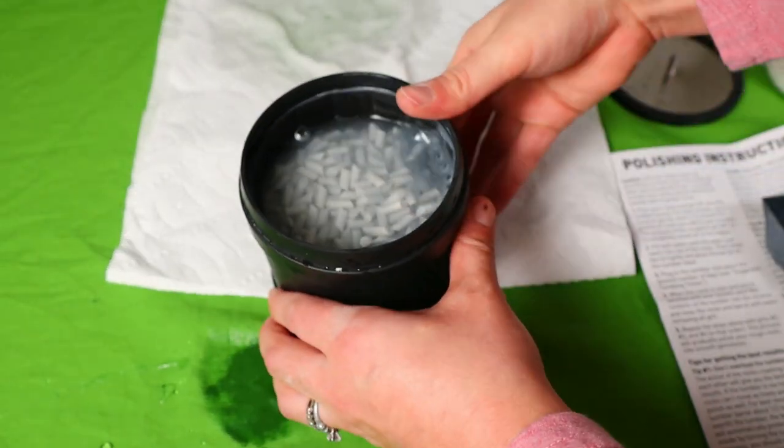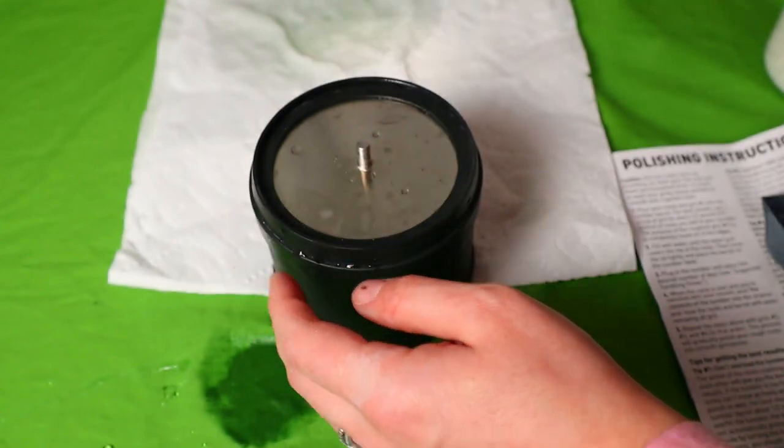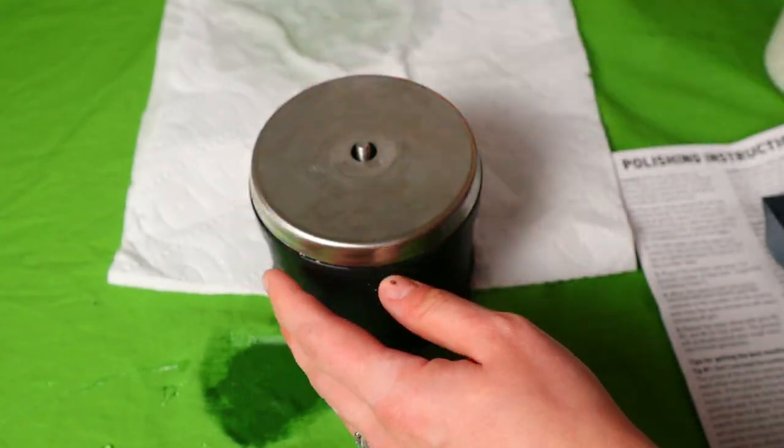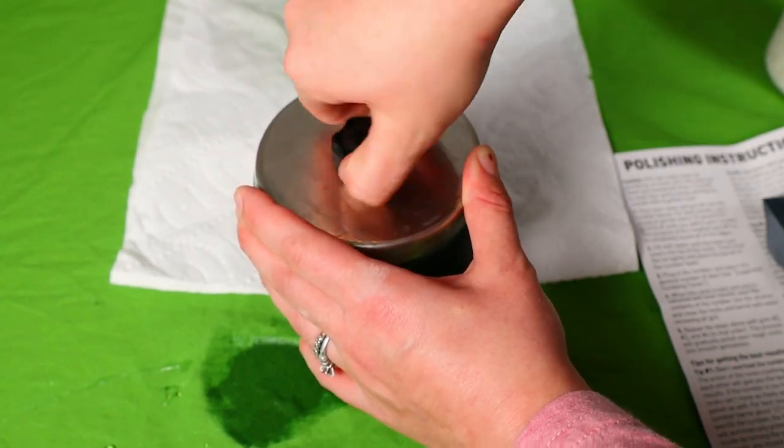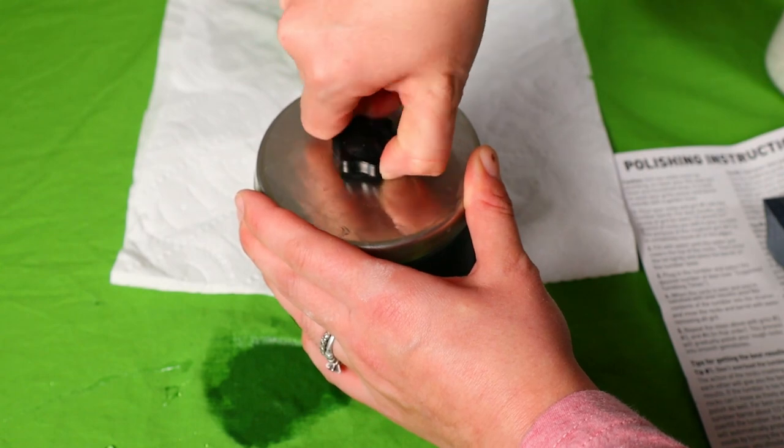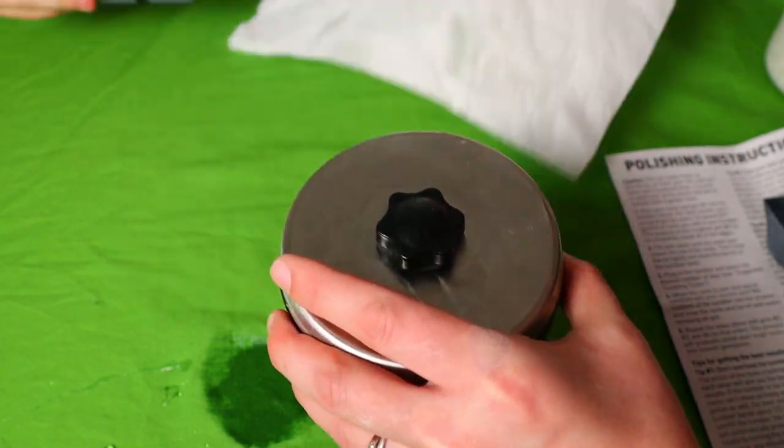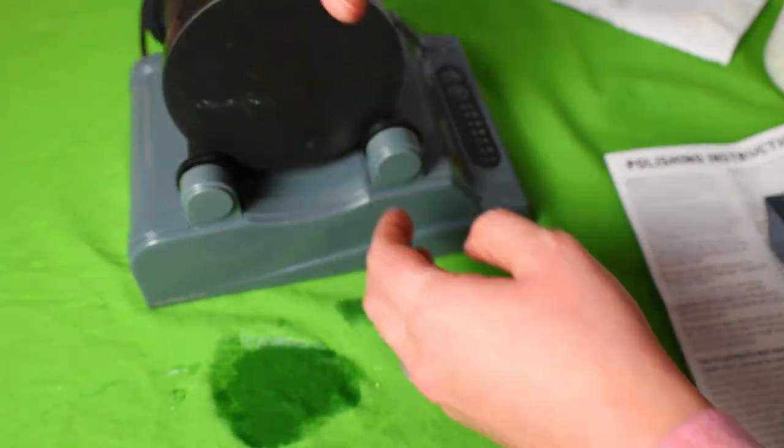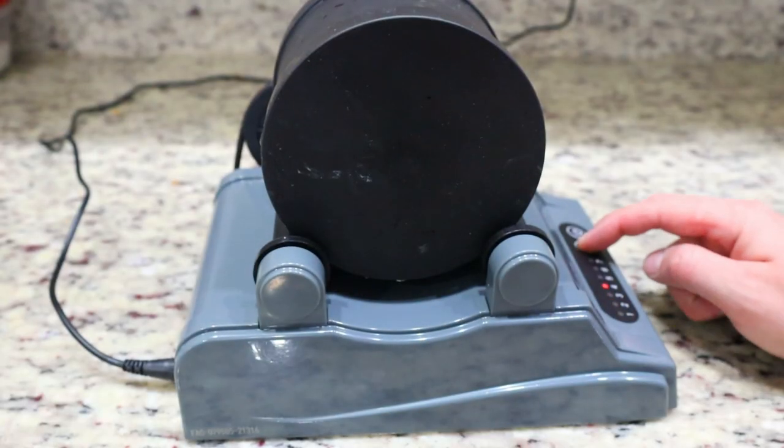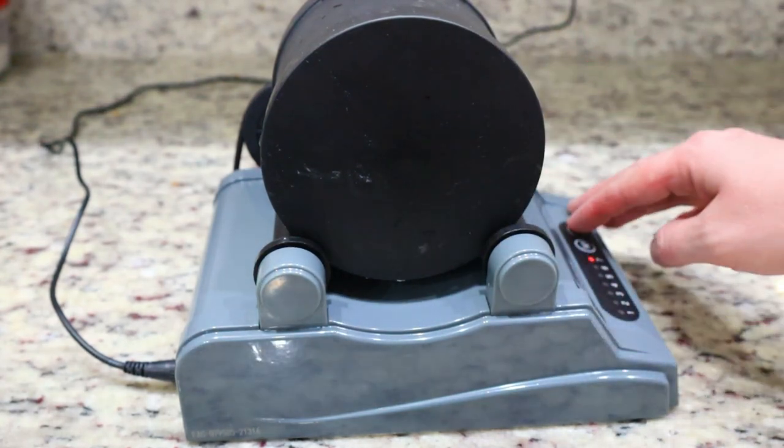Now we've got water in there. It's time to seal it up. I'm going to put this lid on. It snaps in. And then this goes over. And then we screw on the top. Make sure it's good and tight. We don't want it all leaking out. And then this is our tumbler. And it's going to sit on there just like this. We're going to set the days for seven days. So it will run for seven days. And then we're going to hit go. And there it is.